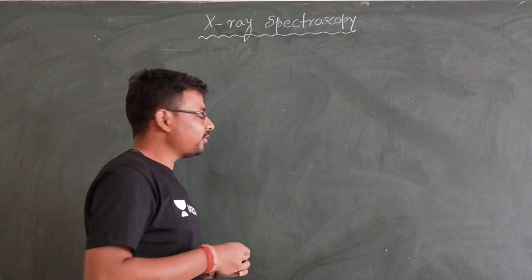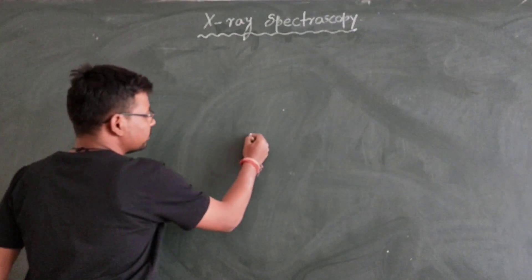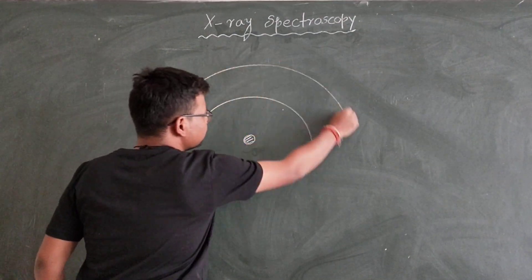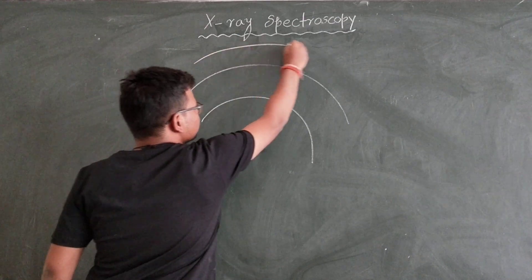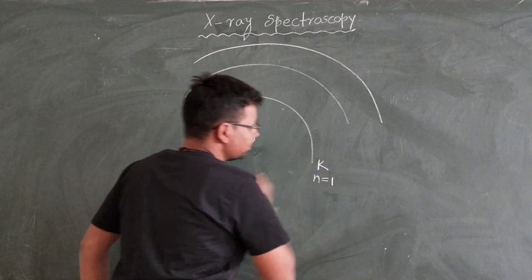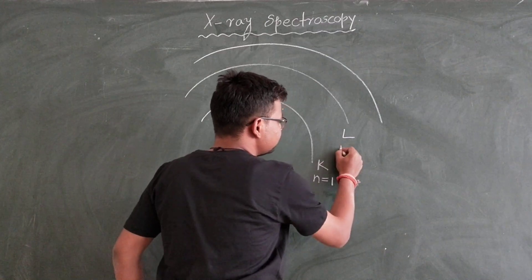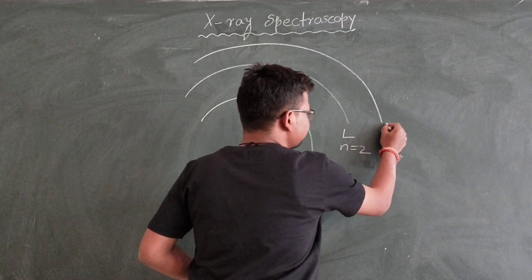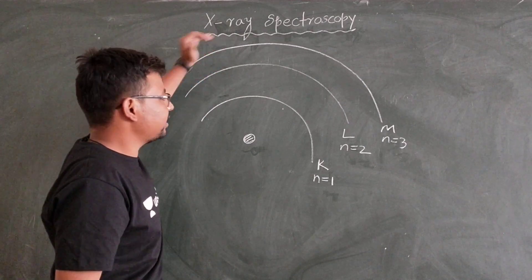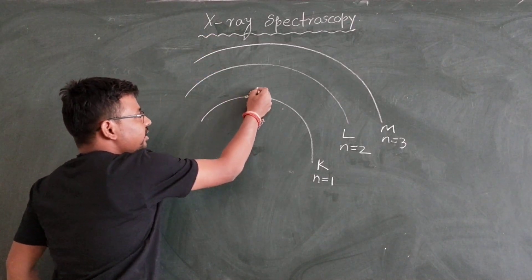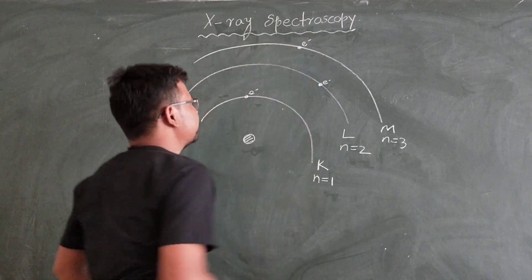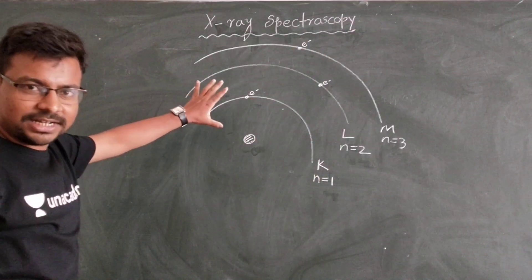I will show you diagrammatically how it is done. There is a nucleus, and surrounding it are the first, second, and third shells. I will name the first shell as K-shell (n=1), the second as L-shell (n=2), and the third as M-shell (n=3). There are electrons in each shell — here is one electron in the K-shell, one in the L-shell, and one in the M-shell. I am showing only a single electron in each particular shell for simplicity.